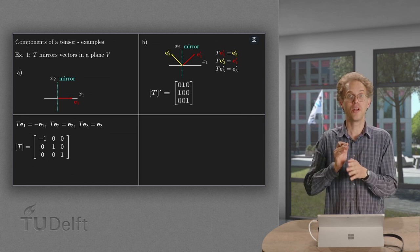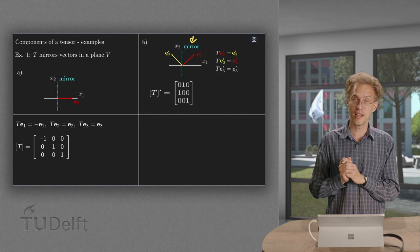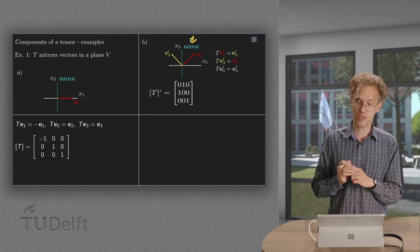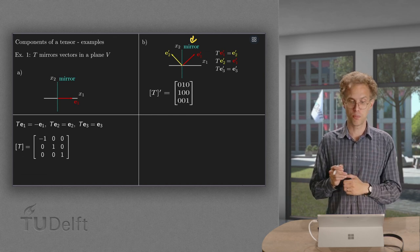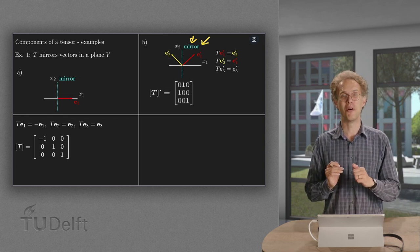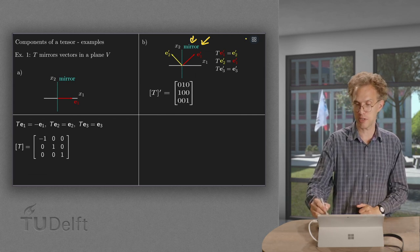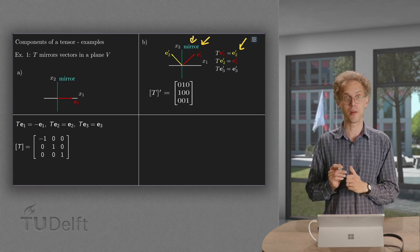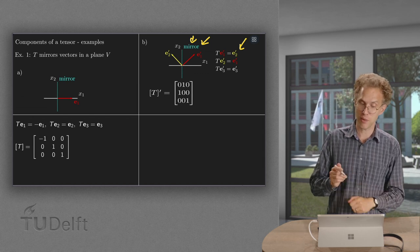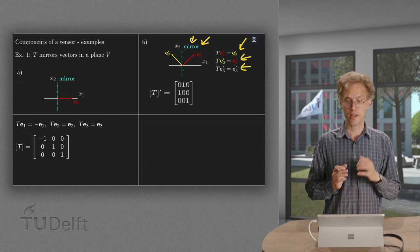Same mapping again, mirroring in the x2-x3 plane, but now we choose a different basis. We leave e3 as it was, but instead we use e1 prime and e2 prime as drawn over here. So what happens now? If I mirror e1 prime, I get the vector e2 prime, so the image of e1 prime equals e2 prime, the yellow one. If we mirror e2 prime, the image equals e1 prime, so T(e2 prime) equals e1 prime, and nothing goes on with the third one.